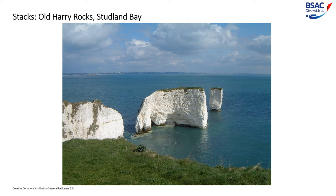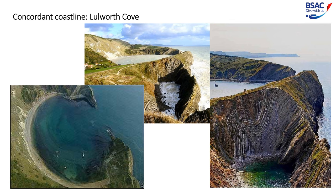Stacks are created by cracks being formed in the headland through erosional processes of hydraulic action and abrasion caused by the sea. The cave becomes larger and eventually breaks through the headland to form an arch. The base of the arch continues to become wider through further erosion until the roof becomes too heavy and collapses into the sea, leaving a stack — an isolated column of rock. The stack is further undercut at the base until it collapses to form a stump. Over time, Old Harry will collapse to form a stump.